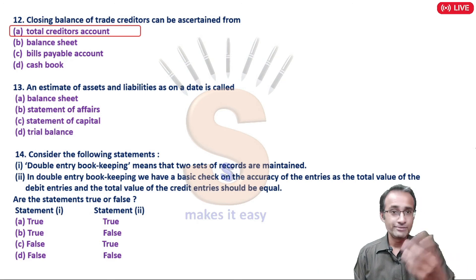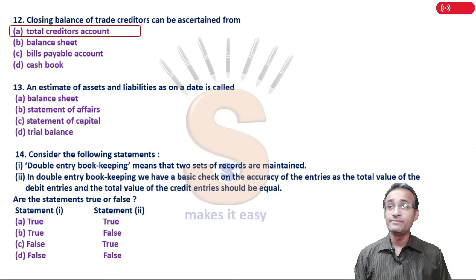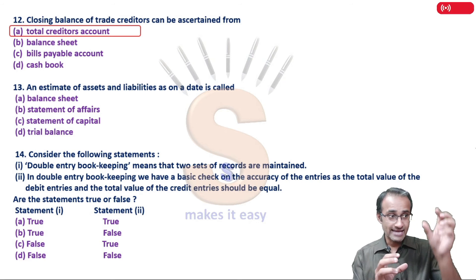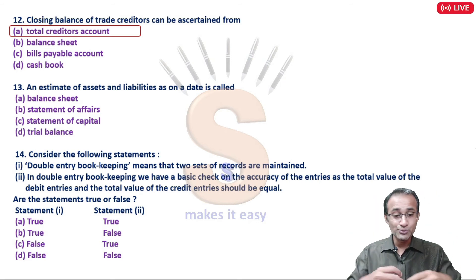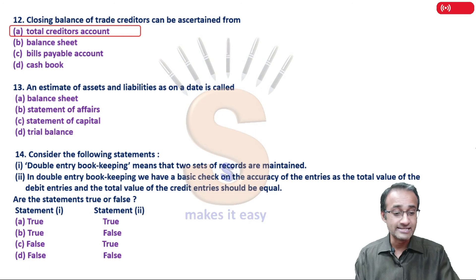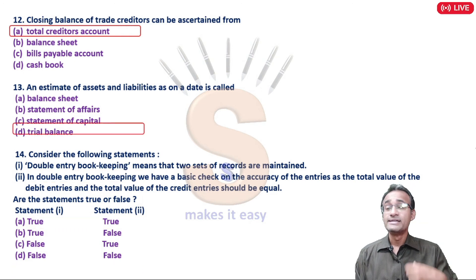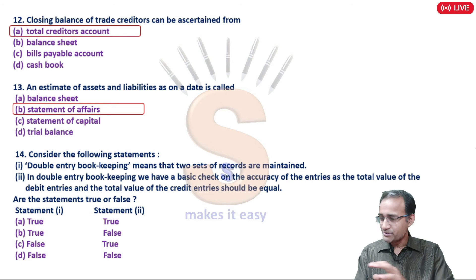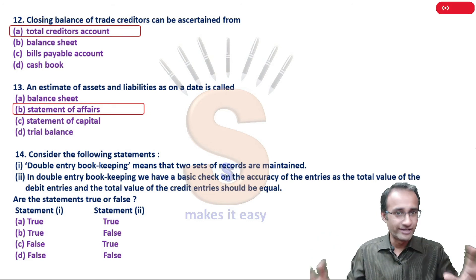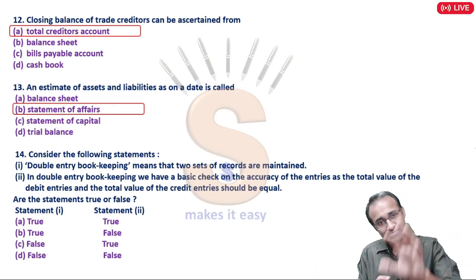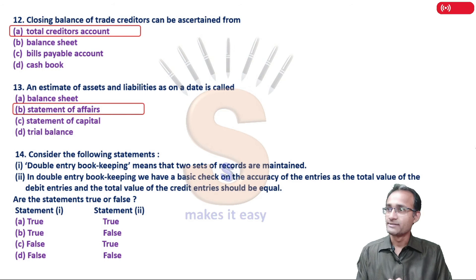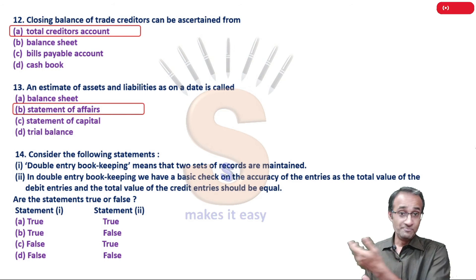Point thirteen: An estimate of assets and liabilities as on a date - you list assets, list liabilities - in Single Entry this is called a Statement of Affairs. It is like a balance sheet but not a perfect balance sheet. The balancing figure in it is considered to be capital.